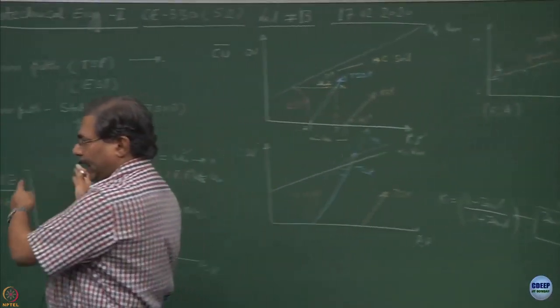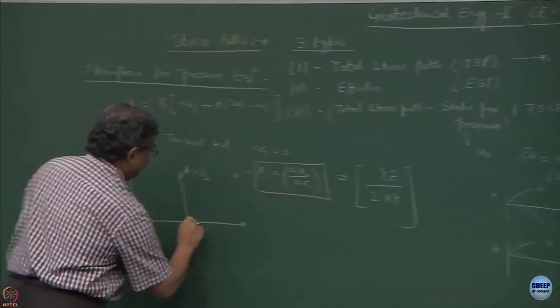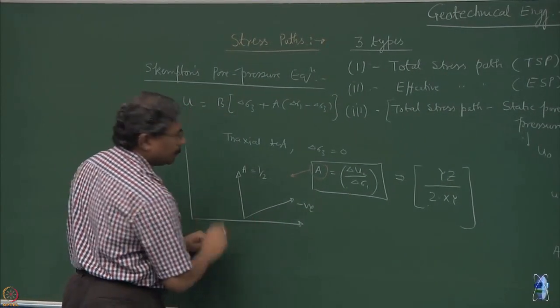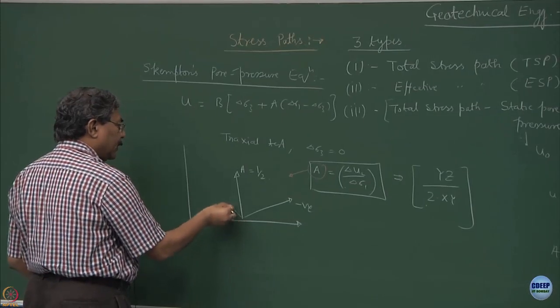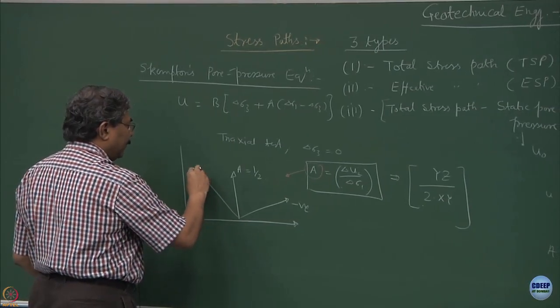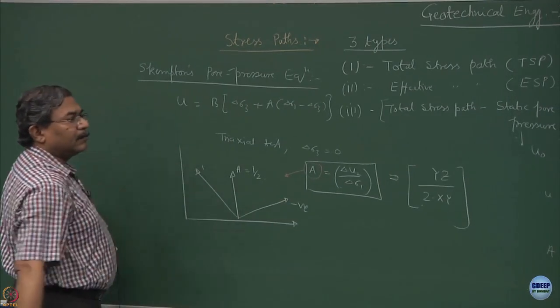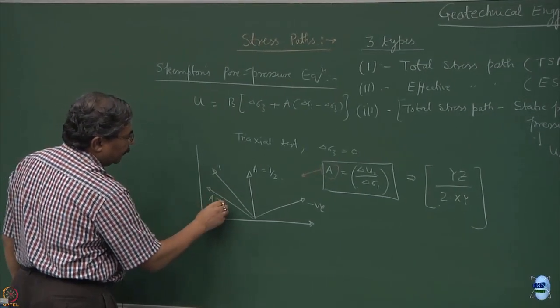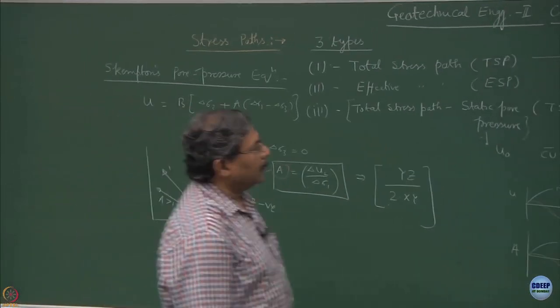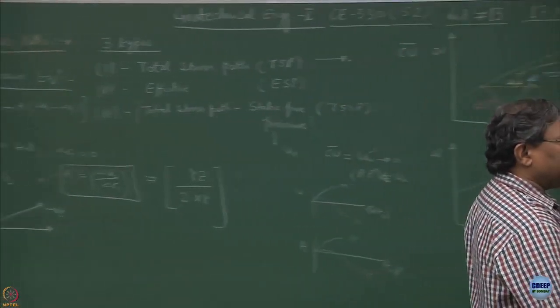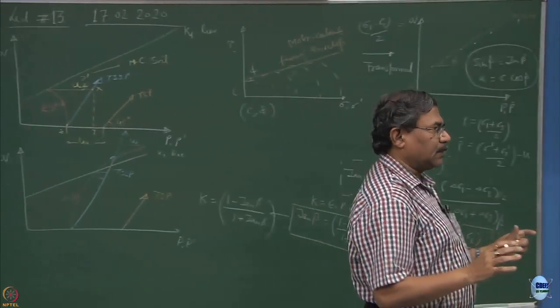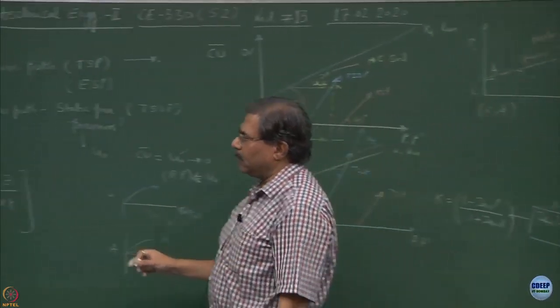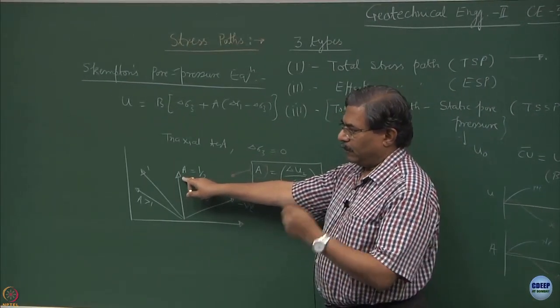What it indicates is if I plot the variation of A line, this is how A equal to 1 upon 2 will look like. This is the stress path for the triaxial test where A is varying in this way. On the right-hand side of this, you will be having U as negative. On the left-hand side, you will be having 1 and this would be greater than 1. This is one of the applications of stress paths in obtaining A parameter, and I hope you understand the importance of A parameter.